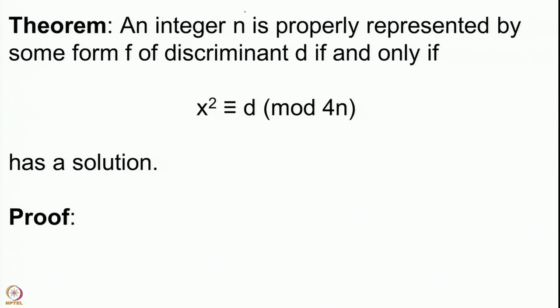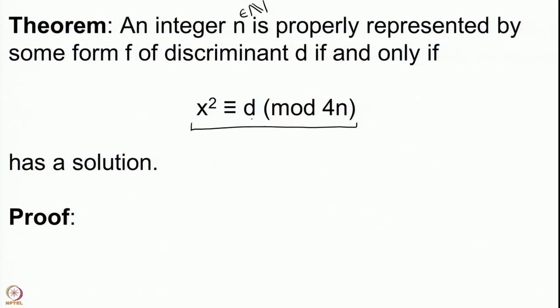The statement is here: an integer n — of course this is in natural numbers — is properly represented by some form f of discriminant d if and only if x² ≡ d mod 4n has a solution. Let us make sure we understand the statement clearly. There is one condition which says that d is a square modulo 4n. We understand this quite well by now; we know how to compute squares modulo a given integer using the Chinese remainder theorem and then using the quadratic reciprocity laws.